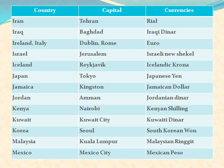Jordan: its capital is Amman and currency is Jordanian Dinar. Kenya: its capital is Nairobi and currency is Kenyan Shilling. Kuwait: its capital is Kuwait City and currency is Kuwaiti Dinar. Korea: its capital is Seoul and currency is South Korean Won. Malaysia: its capital is Kuala Lumpur and currency is Malaysian Ringgit.